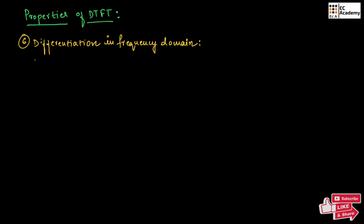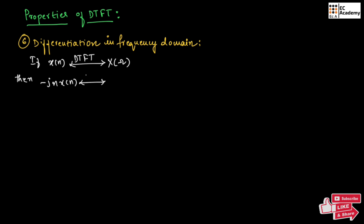It states that if x of n, for this if you perform DTFT, we will obtain x of omega. Then, if we take minus j n x of n, for this if we perform DTFT, we will obtain d by d omega of x of omega.